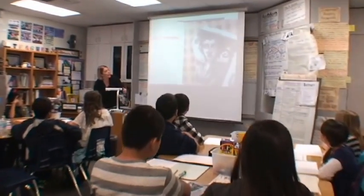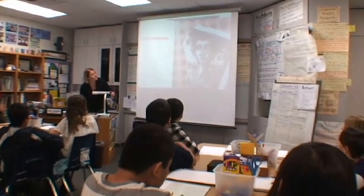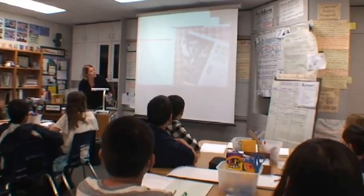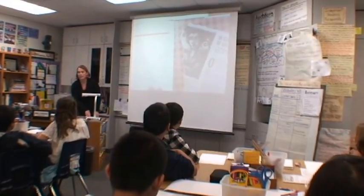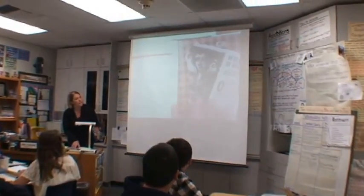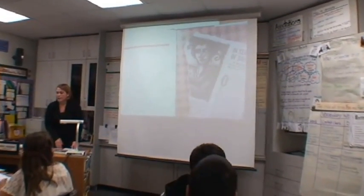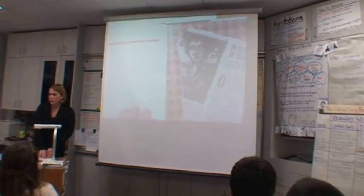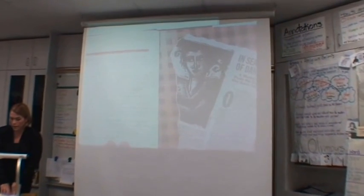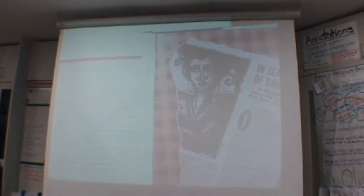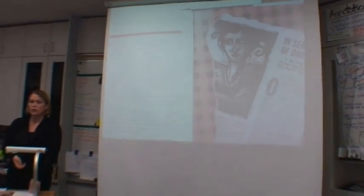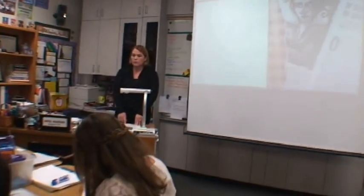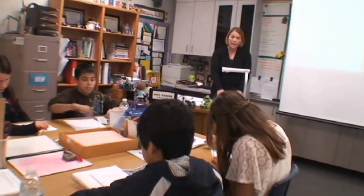We are going to look at the story. We have ancient Greece on this side and modern day on the right-hand side. You're going to read the ancient Greece side. What I want you to do is turn it over, read it first, and circle any confusing or unknown words that you may have.